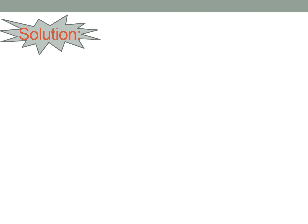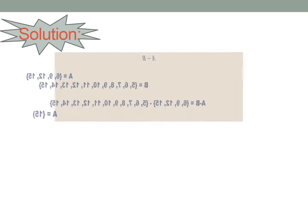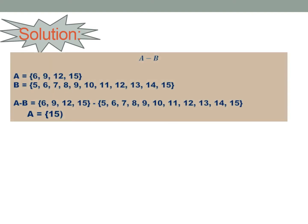Remember that B minus A and A minus B are not equal. So we have here a solution. A minus B: the elements of A are 6, 9, 12, 15, and the elements of B are 5, 6, 7, 8, 9, 10, 11, 12, 13, 14, 15. The common elements are 6, 9, and 12. So the remaining element of A is 15. Therefore, A minus B is equal to {15}.